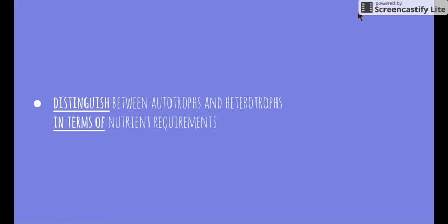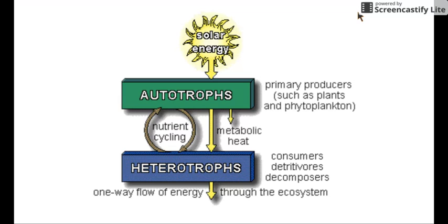Welcome to the next video in the patterns in nature topic. This video will be looking at the dot point: distinguish between autotrophs and heterotrophs in terms of their nutrient requirements. If we have a look at this image, it shows us how energy passes through an ecosystem — something we looked at in the local ecosystem unit, where we examined the different types of energy flow from the sun into our autotrophs.